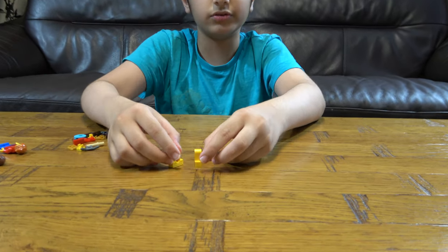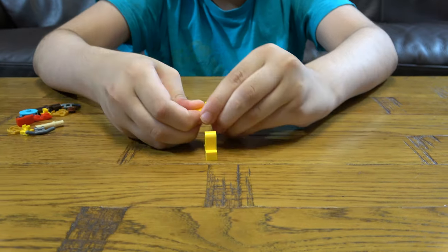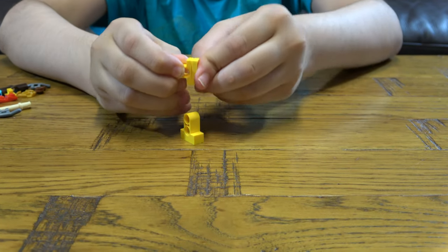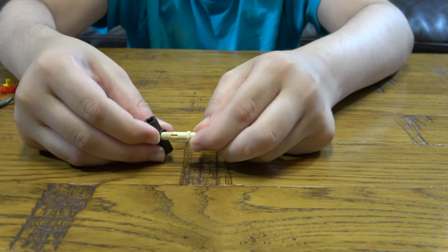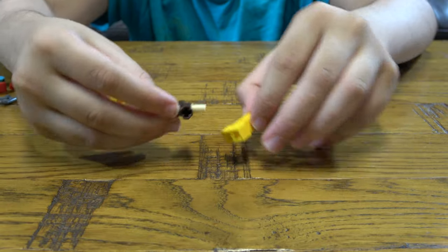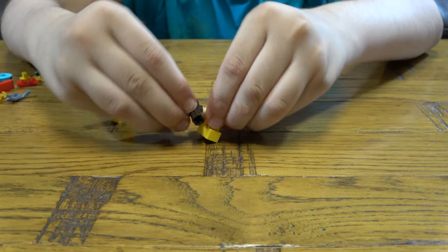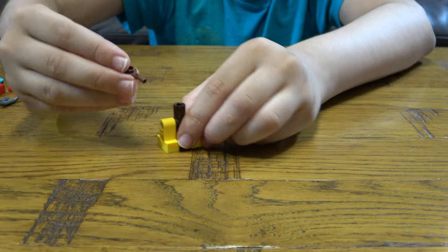First thing we need is two of these. Of course, you need to place a 1x2 underneath it like that. Then we're going to get one of these and put it through that. We're going to put these onto there like this.